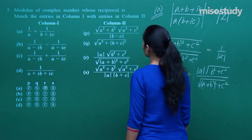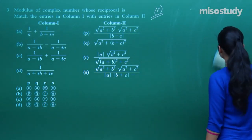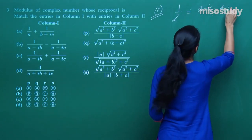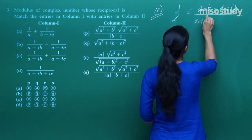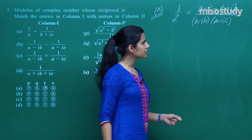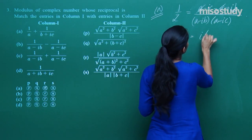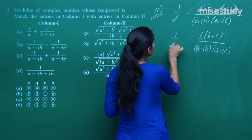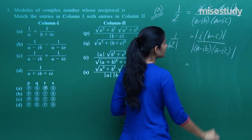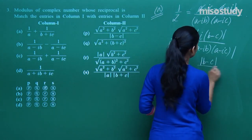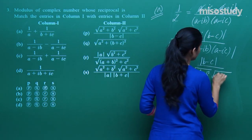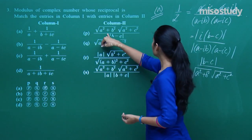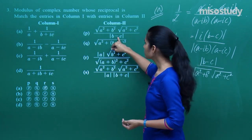Then you have 1/(a − ib) − 1/(a − ic). The numerator becomes (a − ic) − (a − ib) = i(b − c), and the denominator is (a − ib)(a − ic). Taking the modulus: |b − c| / [√(a² + b²)·√(a² + c²)]. So mod z equals √(a² + b²)·√(a² + c²) / |b − c|. Therefore b matches p.